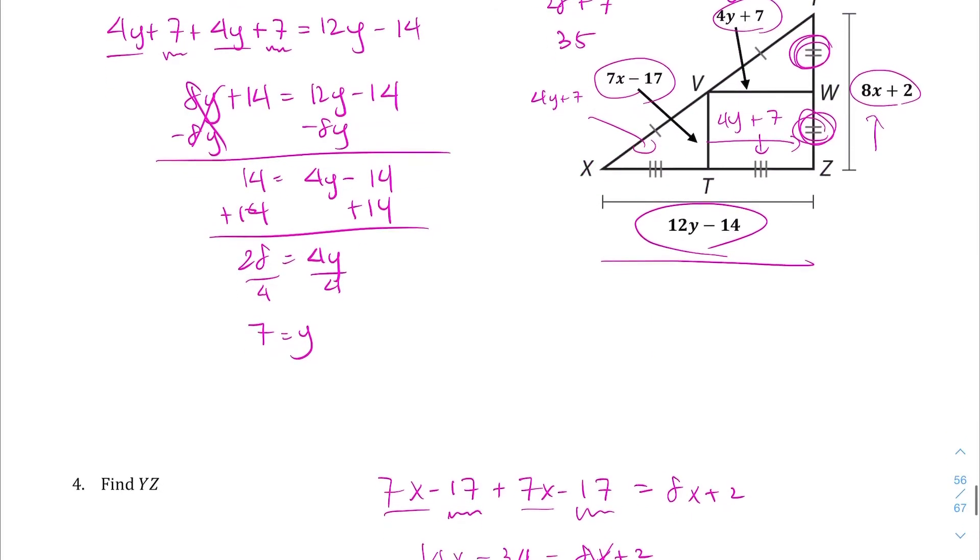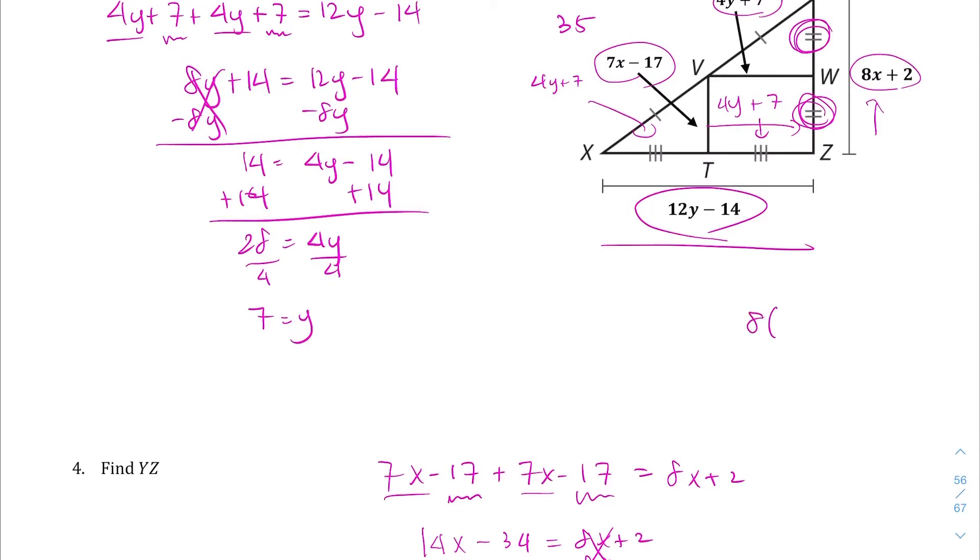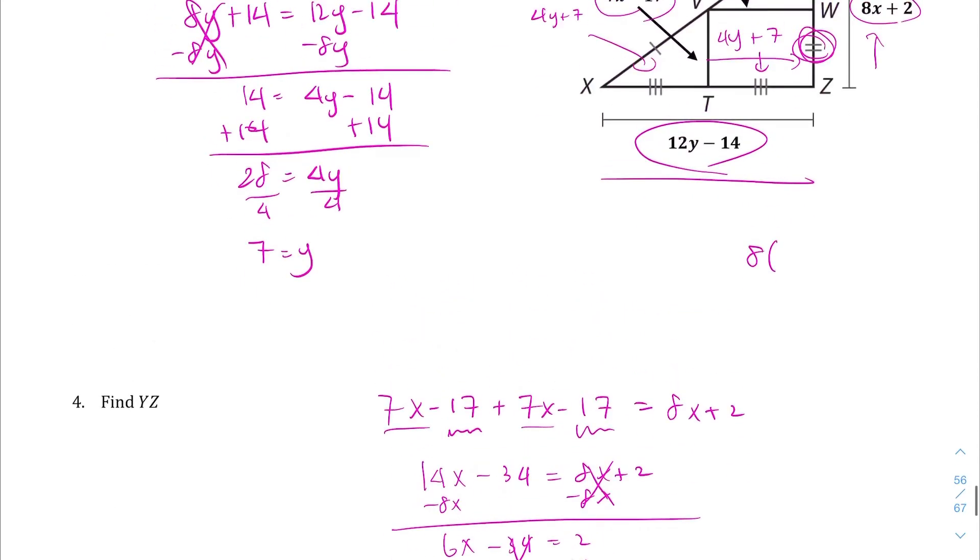And then we're going to plug that X equals 6 right back into there to find YZ. So it's going to be 8 times 6 plus 2, 48 plus 2, so this is going to be 50. So YZ is going to equal 50.